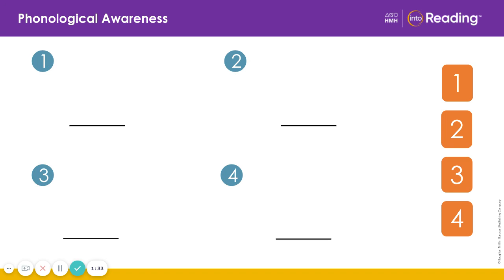Very good. The next word is clock. The word clock has the sounds c-l-o-ck. Four sounds. The next word is lamb.